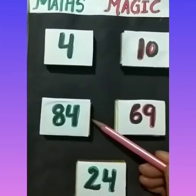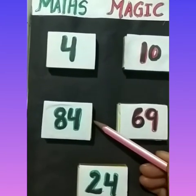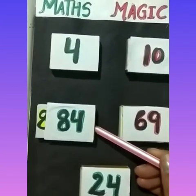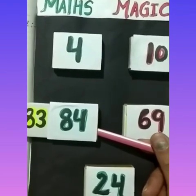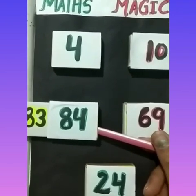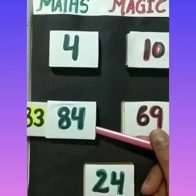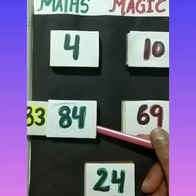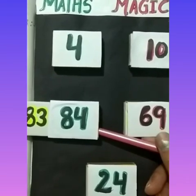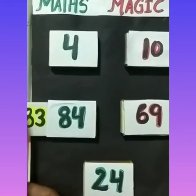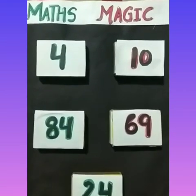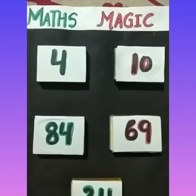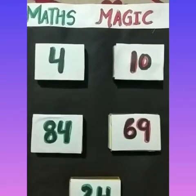Our next number is 84. What comes before 84? 83! What comes before 84? 83. Okay! Let's now do what comes after.